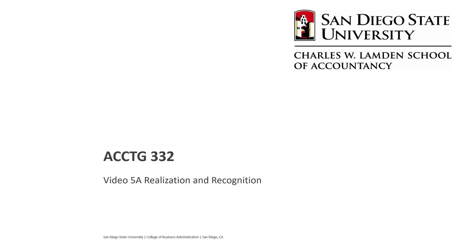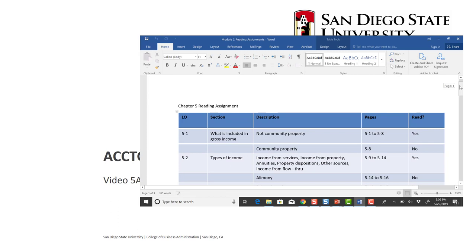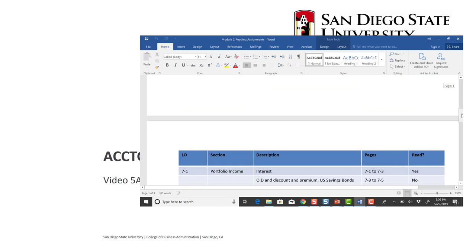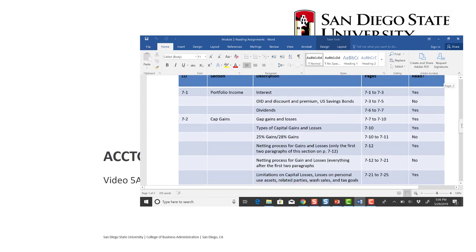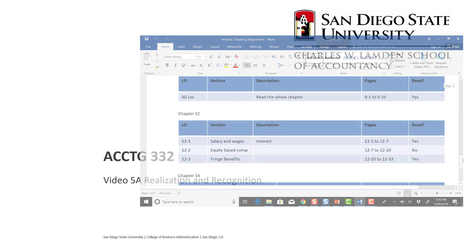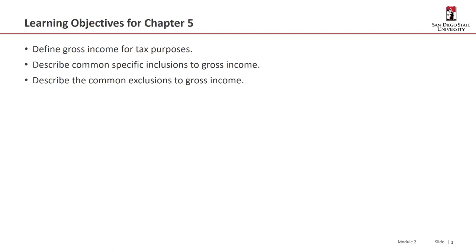Welcome to video 5a, module number two. Be sure, if you haven't already, to read the detailed reading assignment posted in Blackboard. This module has five chapters but we do not cover all five completely, so make sure you only read the parts that are assigned. We'll start with learning objectives for chapter five — I've broken them down by chapter.